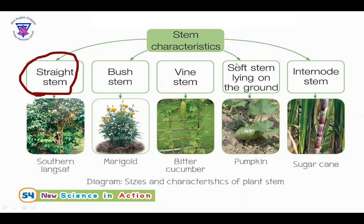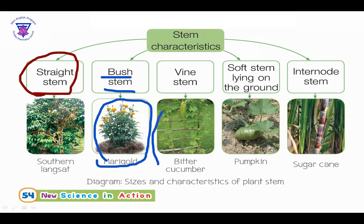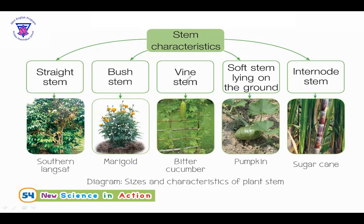Now let's have another one. In the marigold, the STEM is bush — bush STEM. And the next one, the bitter cucumber — the STEM is vine. Vine STEM. That one is the bitter cucumber.